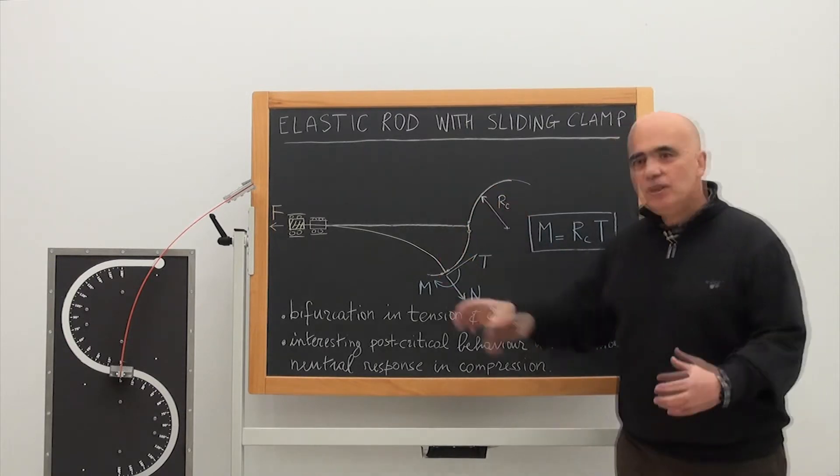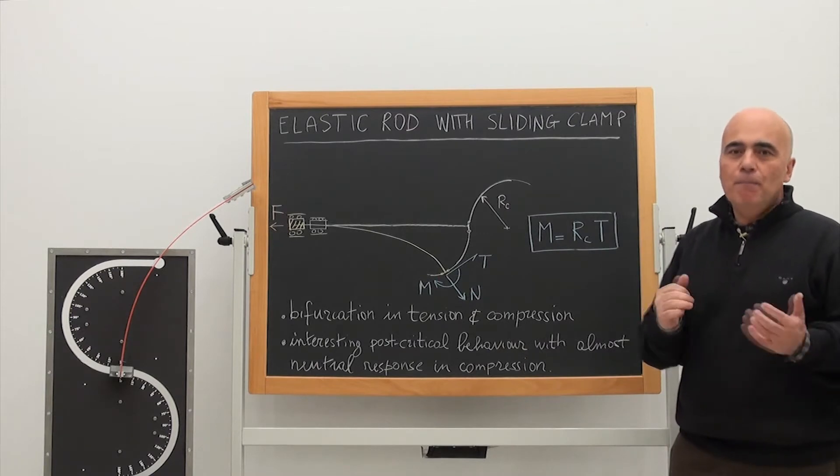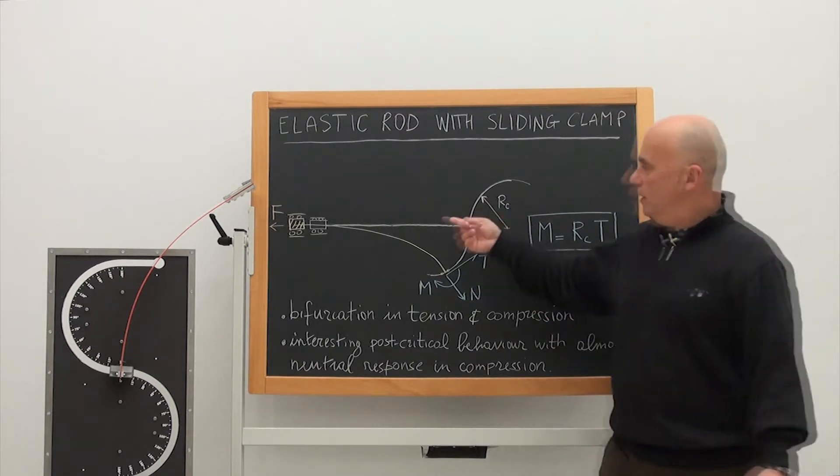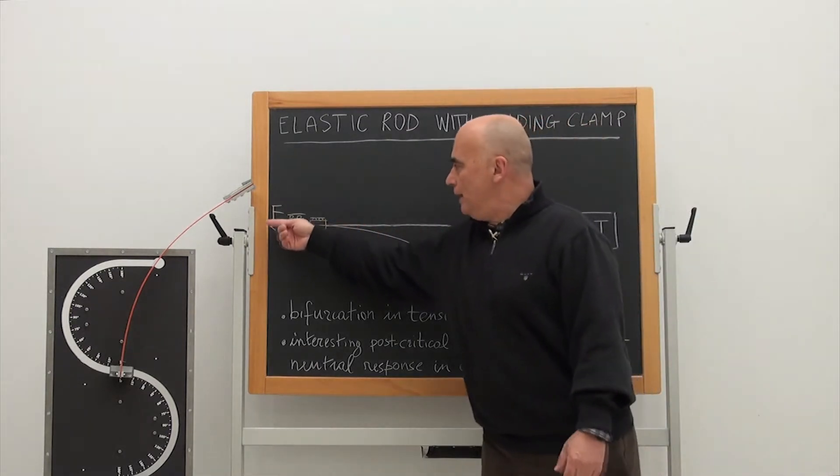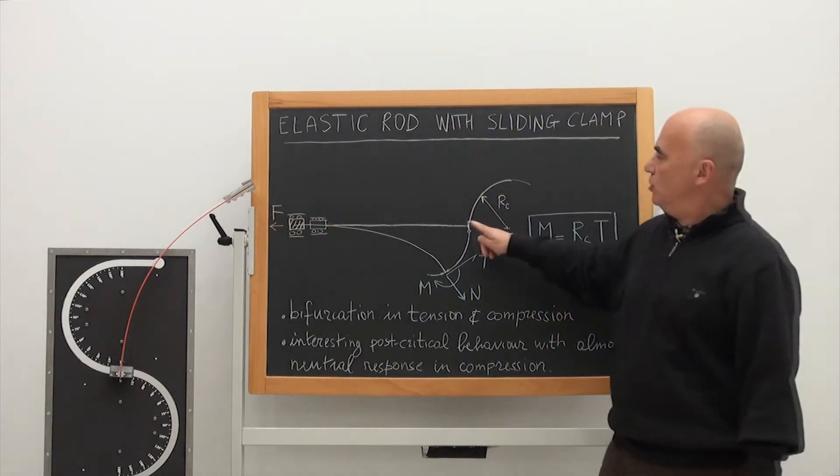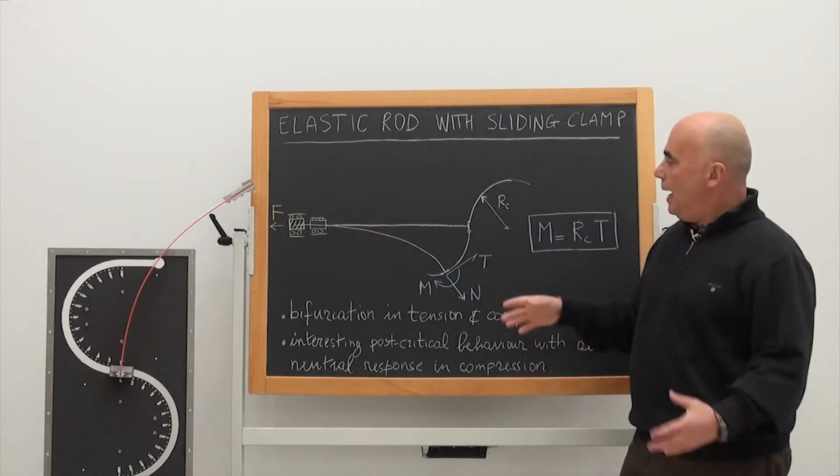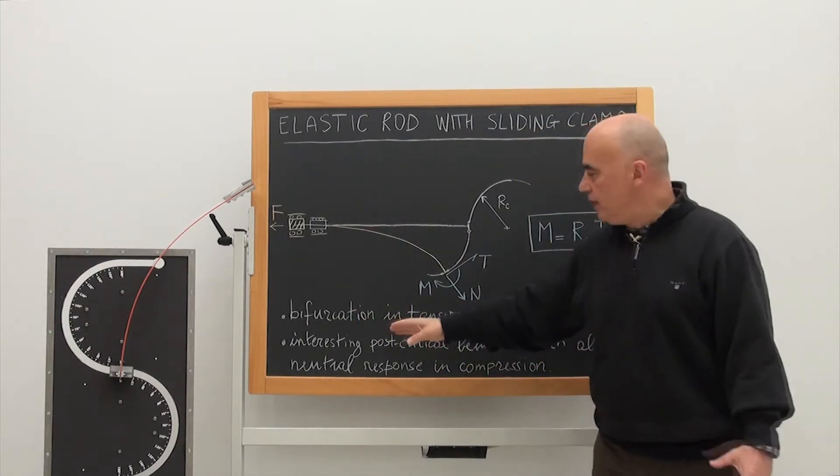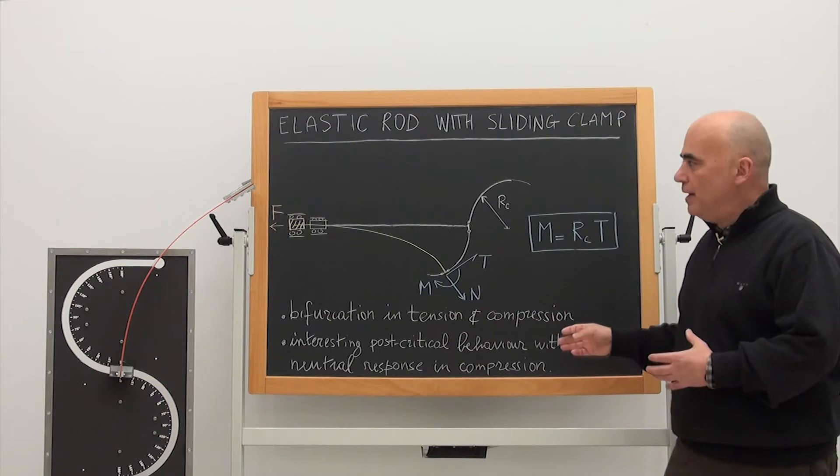This system is an example of a compliant mechanism which is loaded through an axial force which can be tensile or compressive. Its trivial equilibrium configuration is this horizontal one, and this system displays bifurcations in tension and in compression.